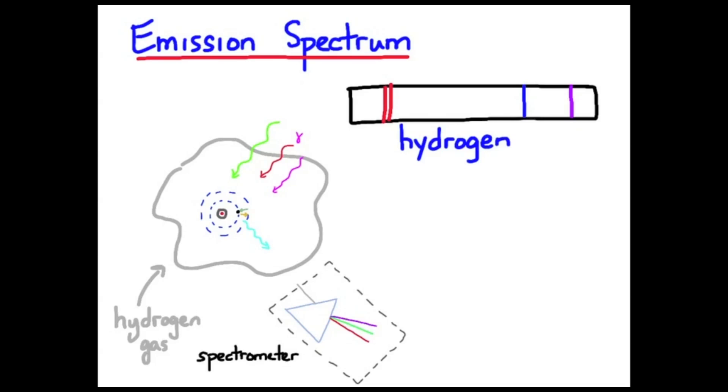These are the ones that we can see, two red, a blue and a violet. This is characteristic of hydrogen.